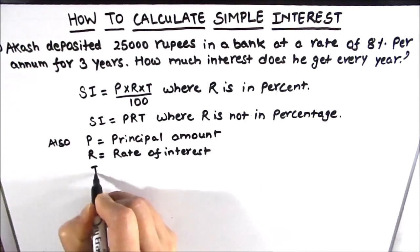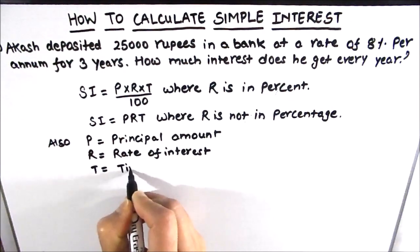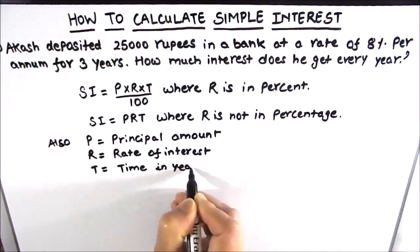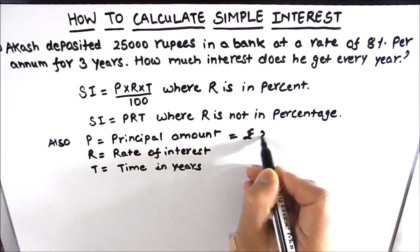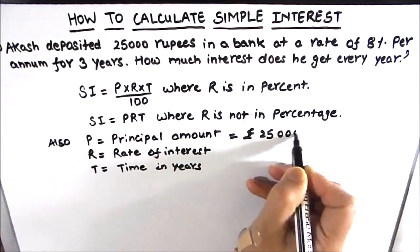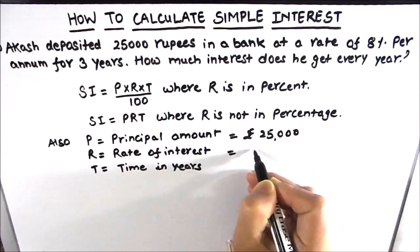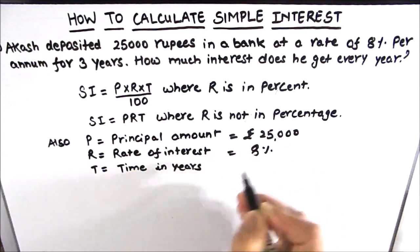So in our question, principal amount is rupees 25,000, rate of interest is 8%, and time is 3 years.